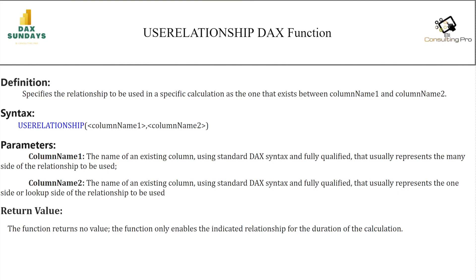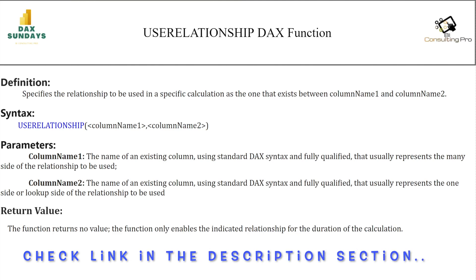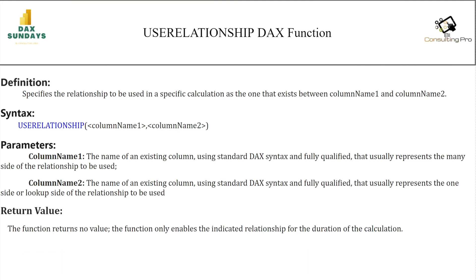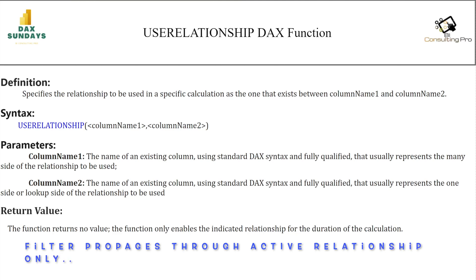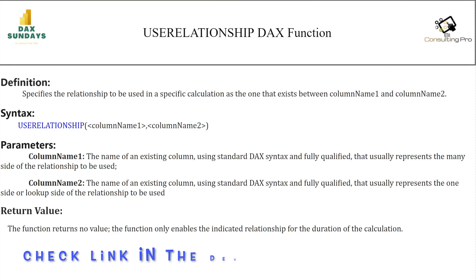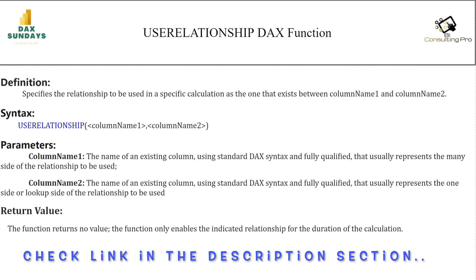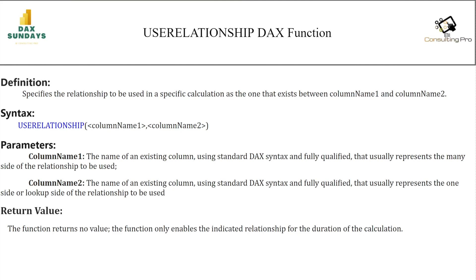If you are not aware of how and when to use data modeling in Power BI, there is already a video on data modeling as part of the DA-100 tutorial — you can go through that to learn about star schema, one-to-many relationships, and filter propagation. All filter propagations in the Power BI data model happen through active relationships. If you have an inactive relationship, you cannot do filtering between different tables, so for that we can use USERELATIONSHIP. This DAX function returns no value; it only enables the indicated relationship for the duration of the calculation.